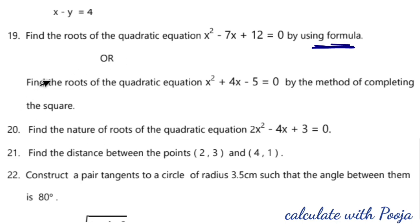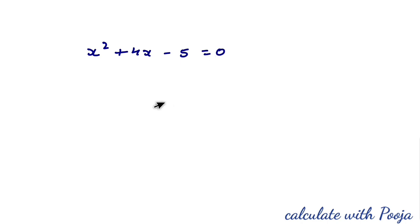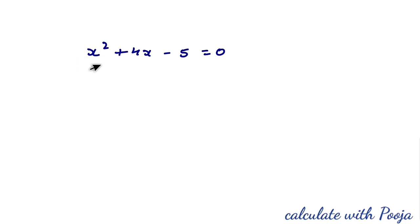Next, the choice question: find the roots of x² + 4x − 5 = 0 by the method of completing the square. The equation is x² + 4x − 5 = 0. First, check the general form ax² + bx + c = 0. Here x² coefficient is 1, so we proceed. Step 2: move the constant — x² + 4x = 5.